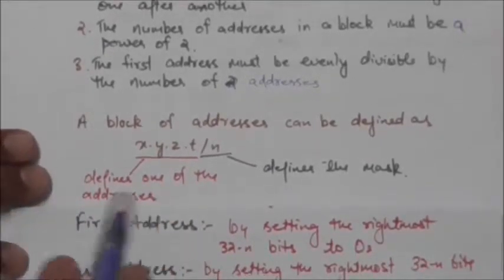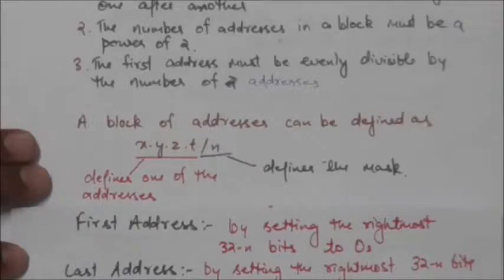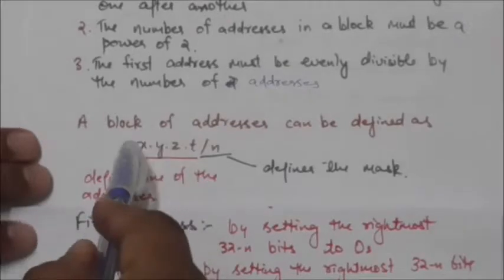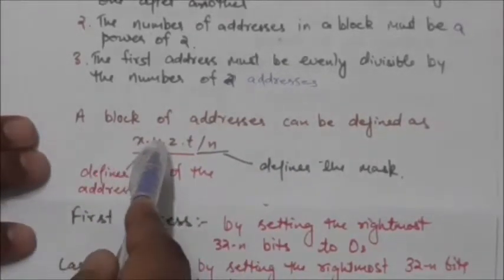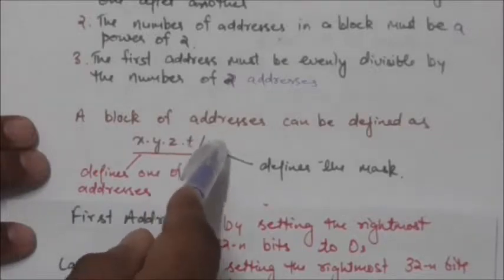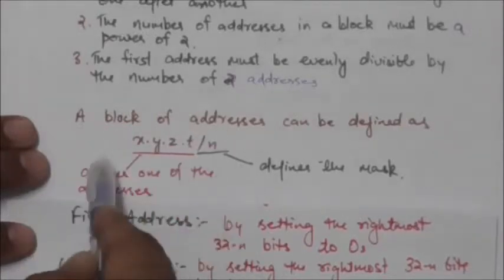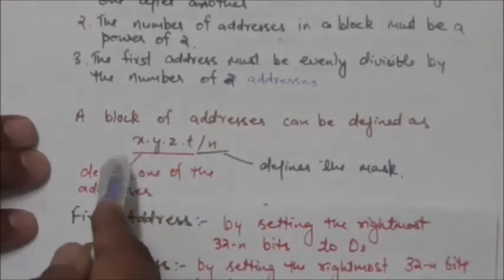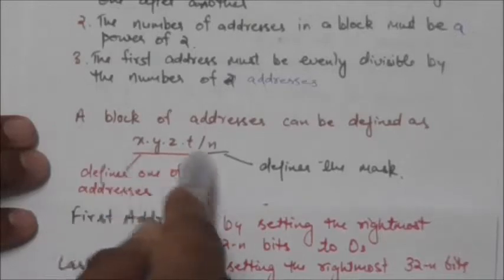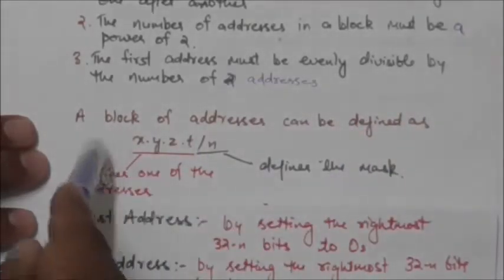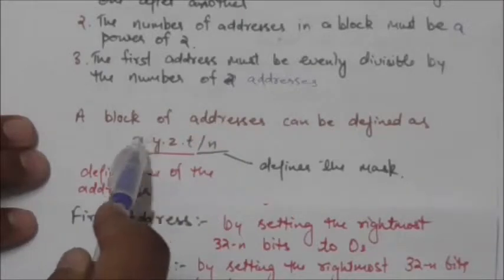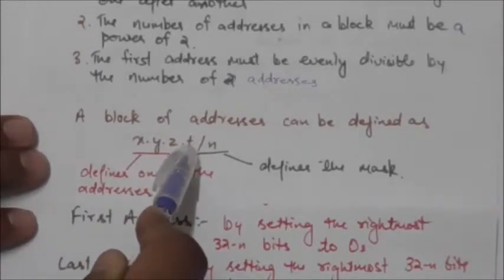In classless addressing, a block of addresses can be defined in the form x.y.z.t/n, where x.y.z.t defines one of the addresses in the block.